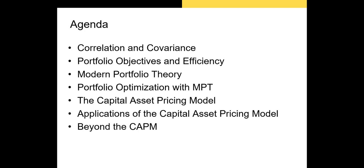I'll discuss how we optimize a portfolio based on the concepts covered in modern portfolio theory. After that I'll introduce the capital asset pricing model, or CAPM, which is one of the most important formulas in all of finance. We'll apply it, discuss its assumptions, and then talk about how we can build models that extend past CAPM — the Fama-French three-factor model, the Carhart four-factor model, and finally some market anomalies.